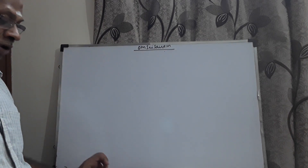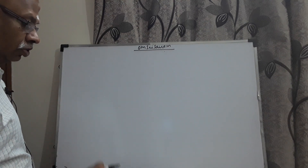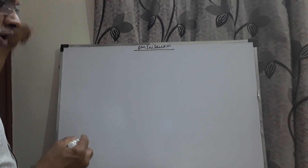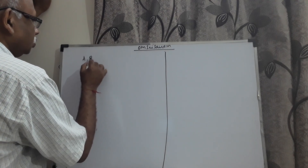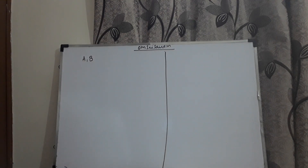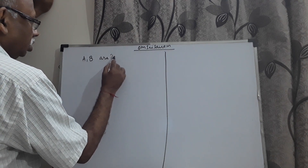Good morning, dear students. In this video presentation, we will discuss some more problems meant for Class 12 of CBSE, which are very often tested in the board. The first problem for today: if A, B are independent, show that subdivision one - A', B are also independent; subdivision two - A, B' are also independent; and A', B' are also independent.